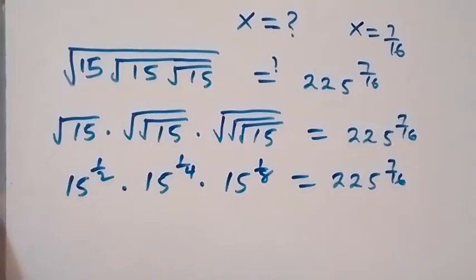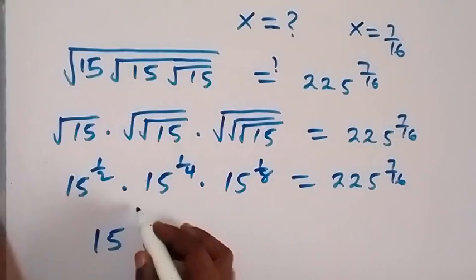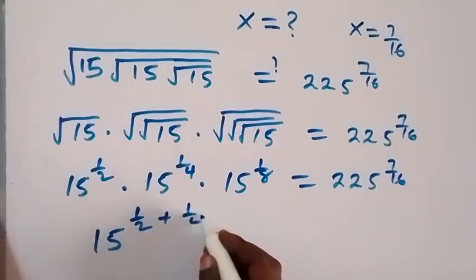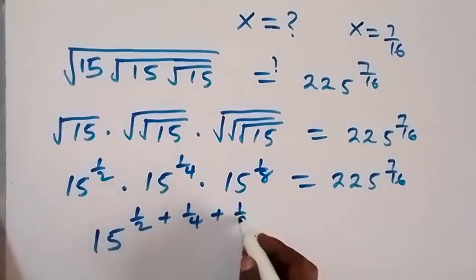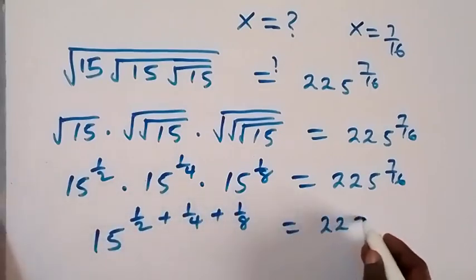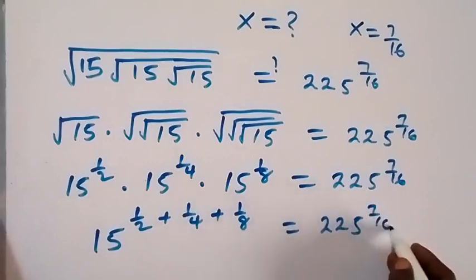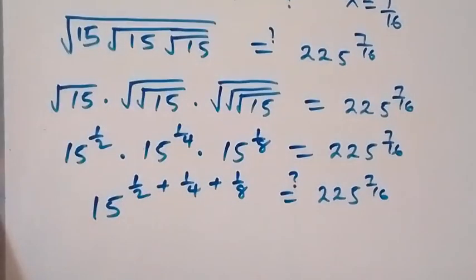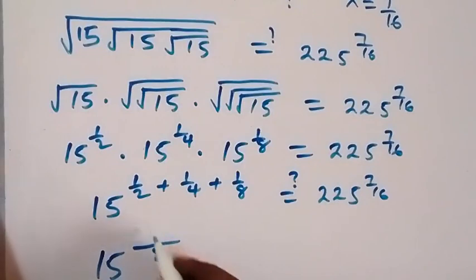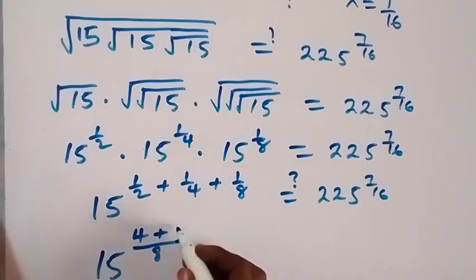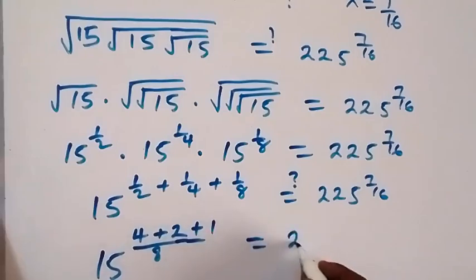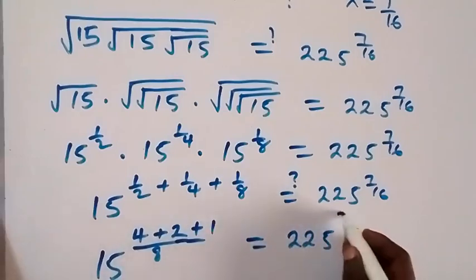Here we can apply the law of indices. Since they multiply, we add the powers: we have one half plus 1 over 4 plus 1 over 8. This equals 225 raised to power 7 over 16. The common denominator is 8: 2 goes into 8 four times giving 4, plus 4 goes into 8 two times giving 2, plus 8 goes into 8 once giving 1. That's 7 over 8. So 15 raised to power 7 over 8 equals 225 raised to power 7 over 16.